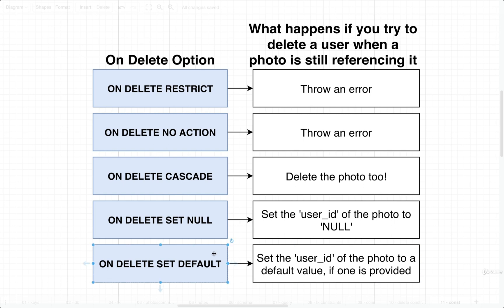Finally, we can use ON DELETE SET DEFAULT. When we create a table, we can specify that a column should have a default value. If we set this option and ever delete the associated user, the user ID column of the photo will be assigned that default value. We'll see an example of that later on as well. So those are the different options — where we set them is the big question. When we come back next video, we're going to figure out how to set these options and do some testing with CASCADE and NULL.